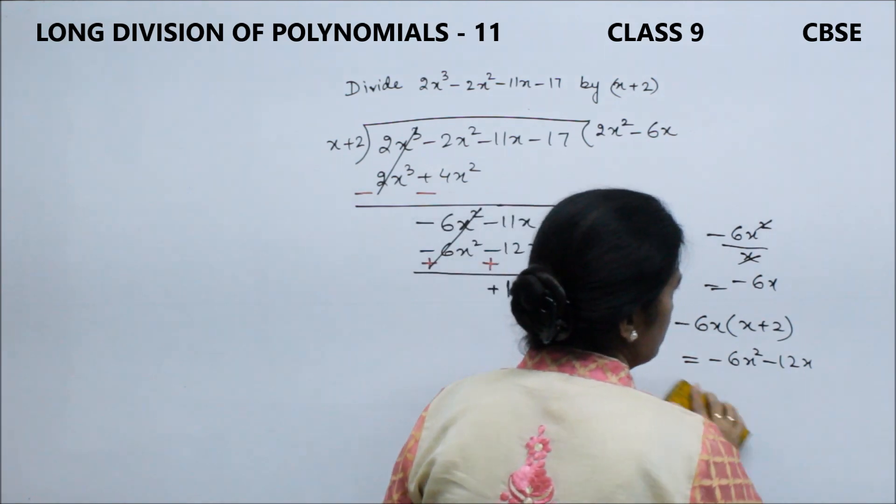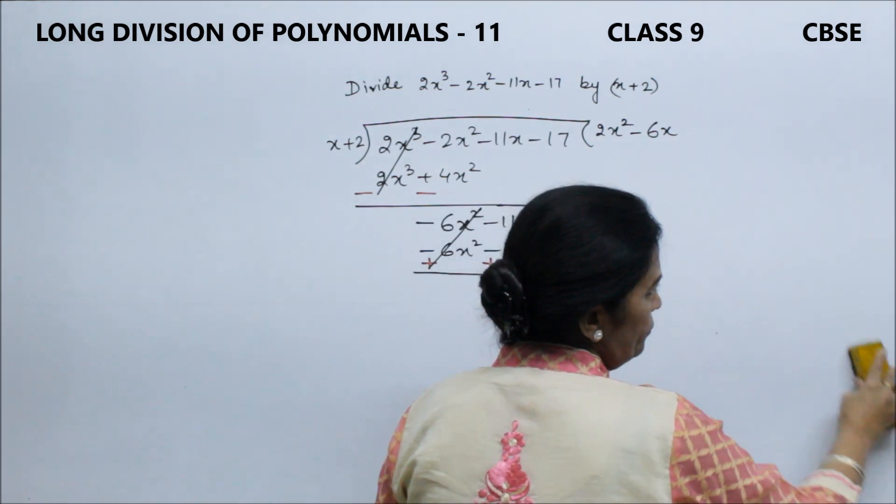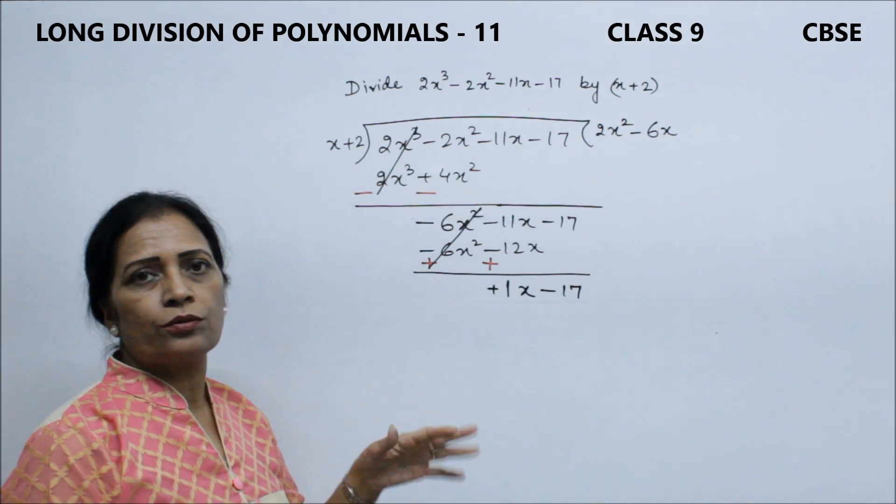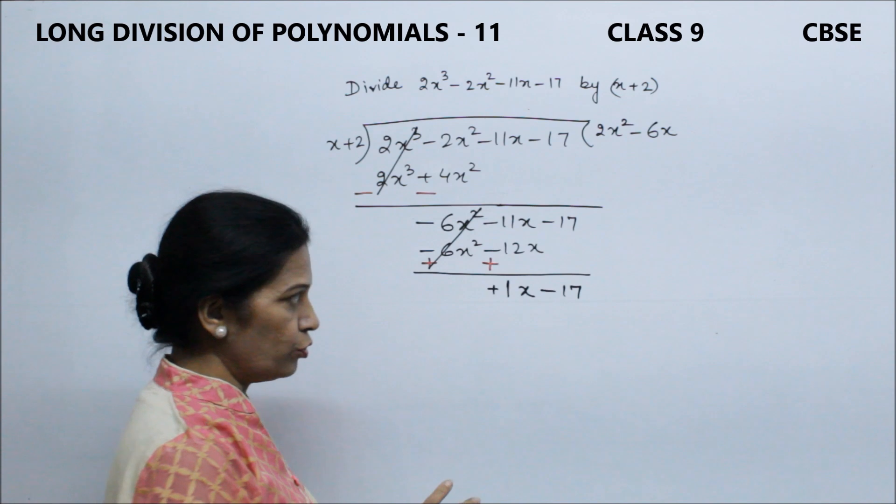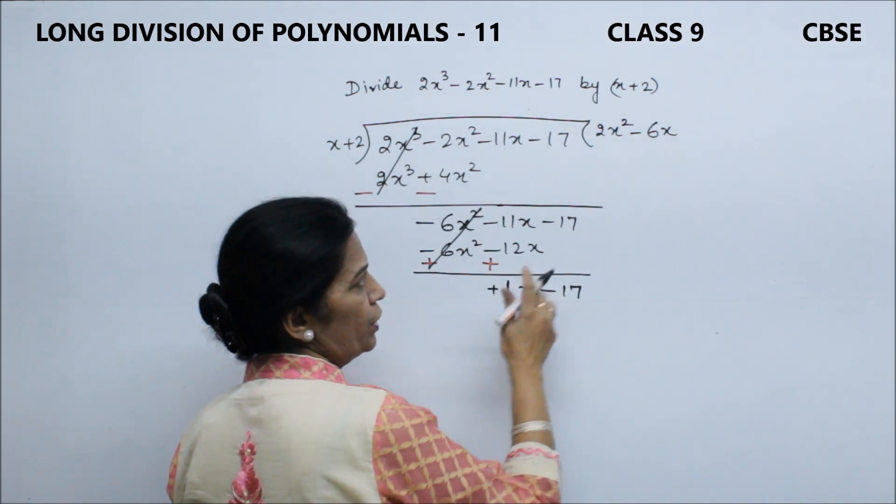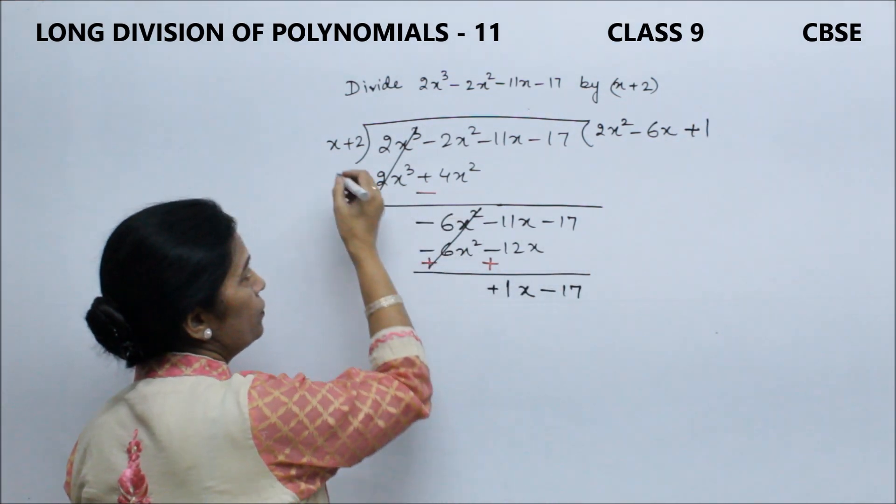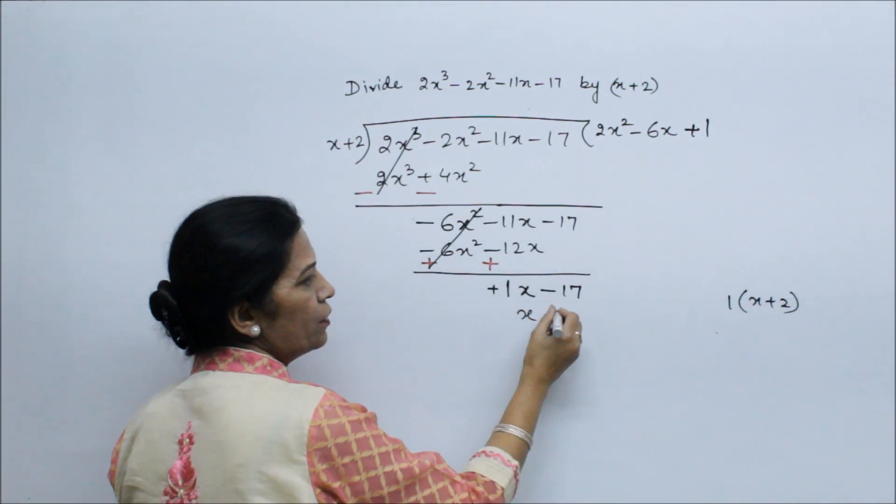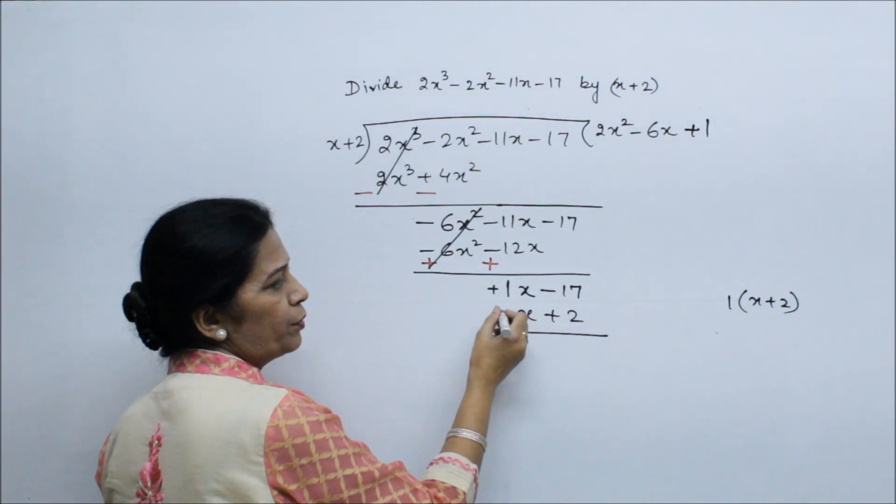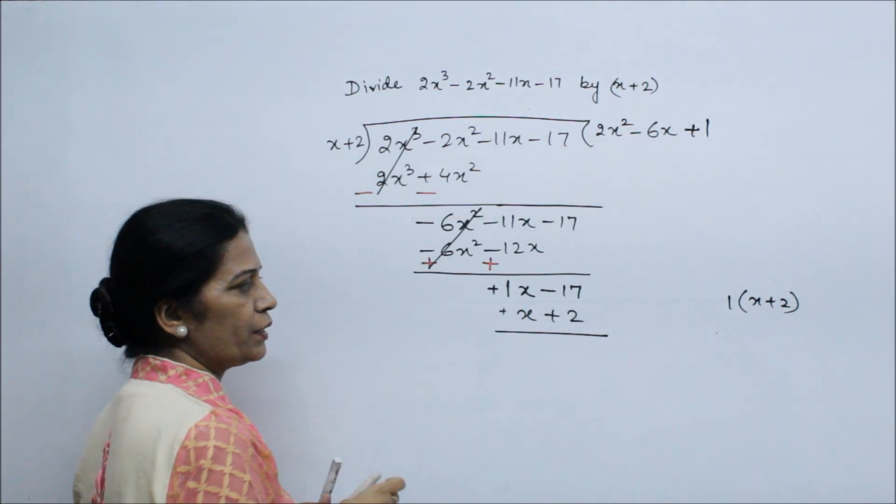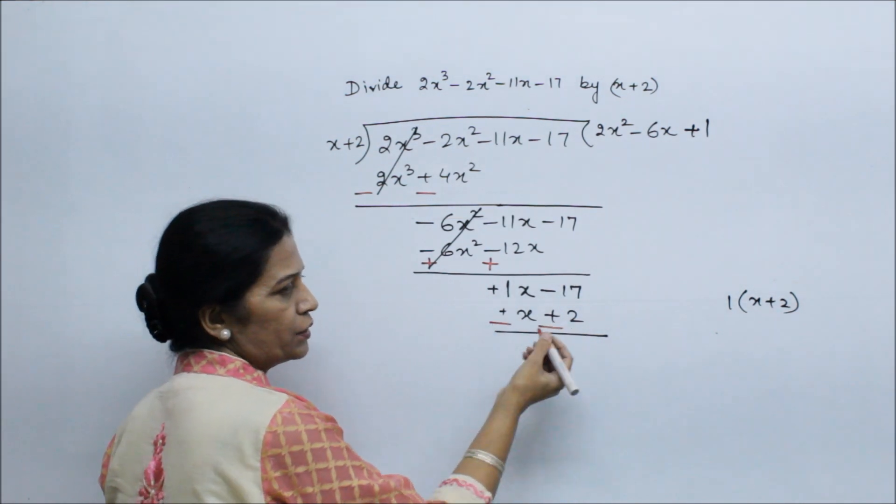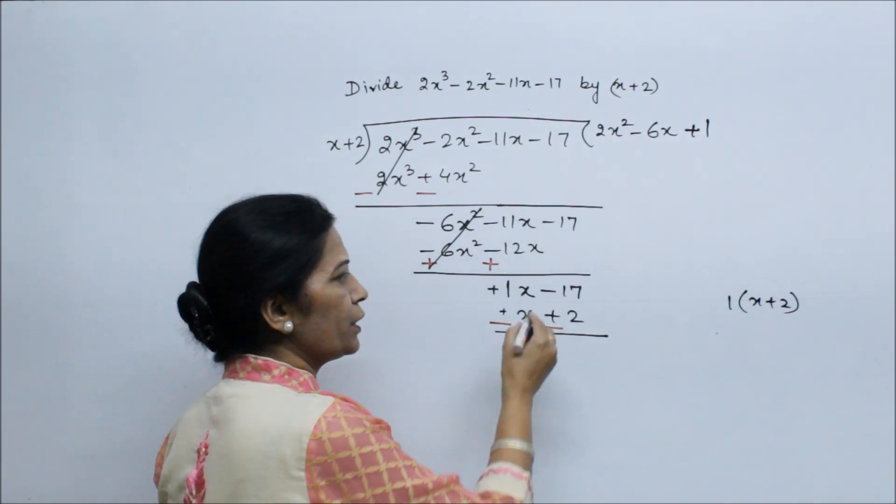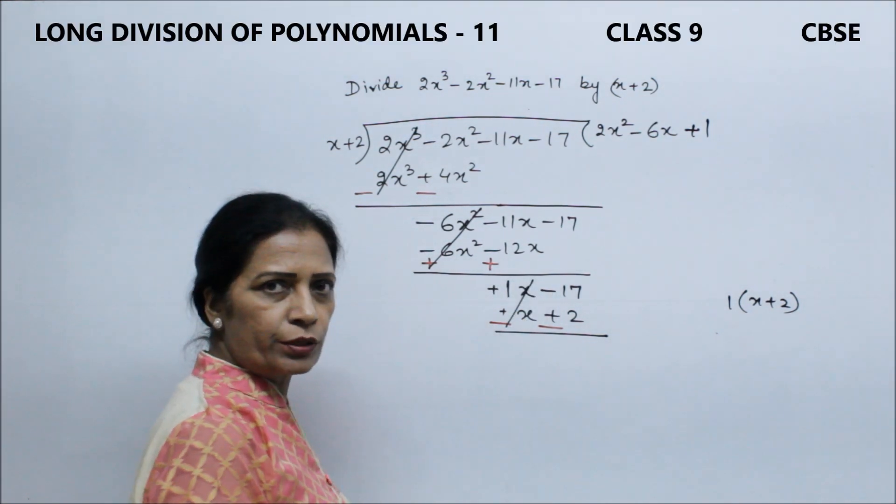Next step is easy. You can see our divisor is x + 2. What is the sign here? Positive. But what do we do here? Like we change the sign, as in number division, we change the sign. So this will cancel.